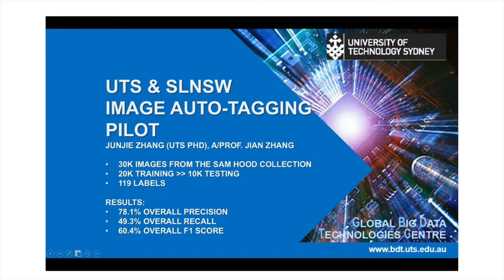One of the great challenges of digitizing large photographic collections is how we describe them at a level that makes the content useful. For example, one of the collections waiting to be digitized is the Australian Consolidated Press photographic archive — images dating from the 1920s to the 1980s from magazines such as Pix Magazine and Women's Day. There are around 28,000 images depicting social and everyday life in New South Wales. The cataloguing challenge is enormous, and if they're not well described they cannot be easily discovered.